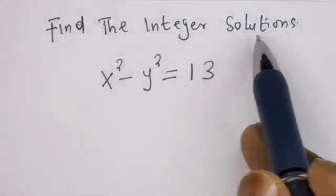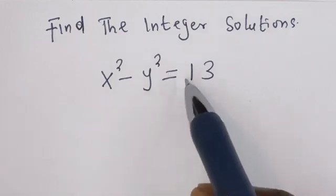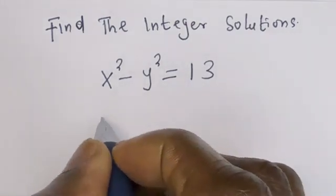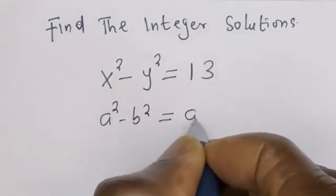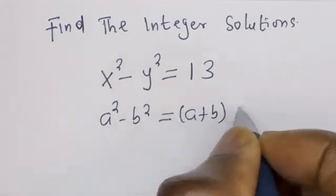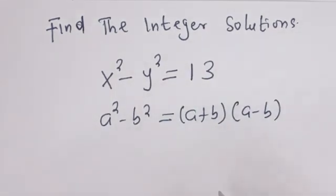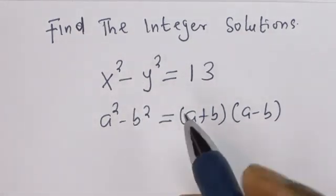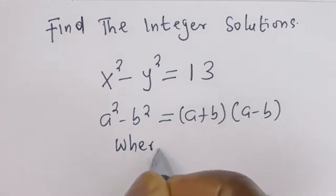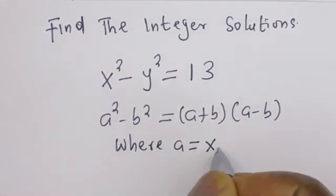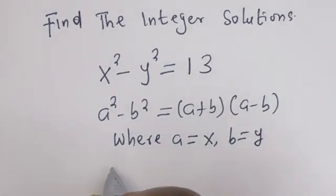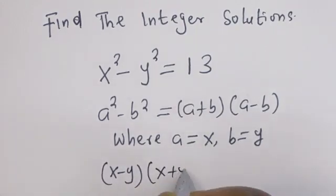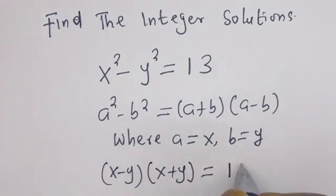Hello. How to find the integer solutions in this problem: x squared minus y squared is equal to 13. Take note that if you have a squared minus b squared, this is equal to (a + b)(a - b), because this is the difference of two squares, where a is equal to x and b is equal to y. Then we have (x - y)(x + y) is equal to 13.